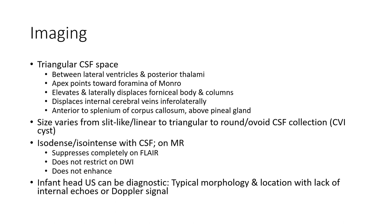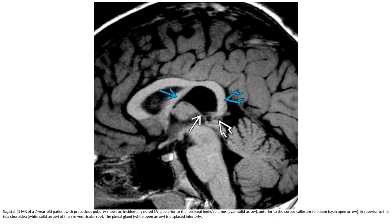With legs of intracranial curl or diploid signal. This is a T1 of a seven-year-old patient, imaged incidentally. Note the CVI posterior to the fornix body and column, anterior to the corpus callosum splenium.